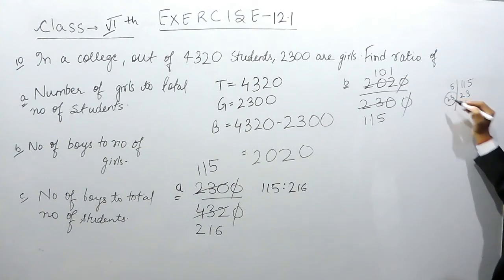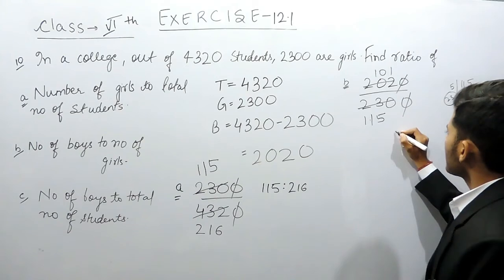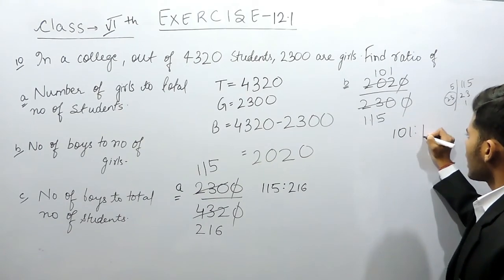And 23 cannot cancel out, 1, 0, 1. So, the ratio will be equal to 101 ratio 115.